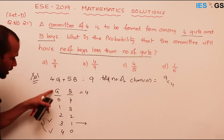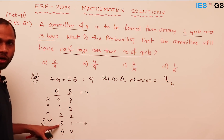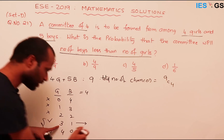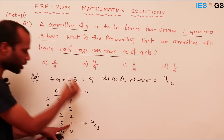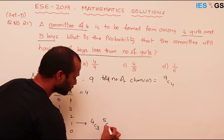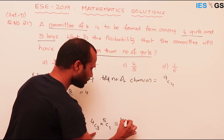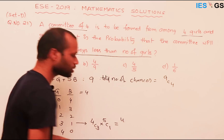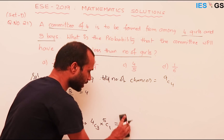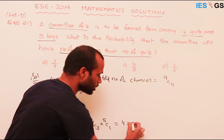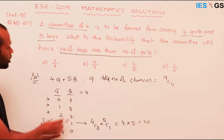How many chances are there to select three girls and one boy? Total four girls are available, so the number of ways to select three girls is 4C3. The number of ways to select one boy out of five boys is 5C1. So total possibilities are 4C3 × 5C1. 4C3 equals 4, and 5C1 equals 5, giving a total of 20.